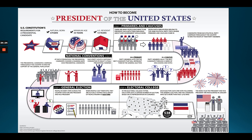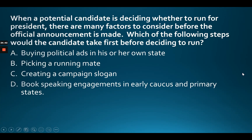The campaign process: you start with primaries and caucuses, then move to the convention, then the general election, and finally you need to win the Electoral College. When running for president, you first go to early caucus and primary states like Iowa and New Hampshire to fundraise and talk to voters. Democrats are now changing their starting state to South Carolina.